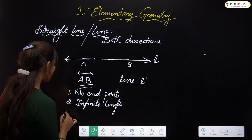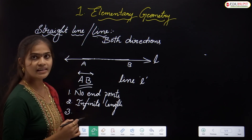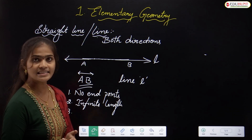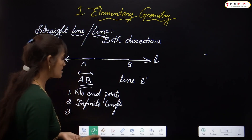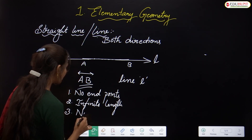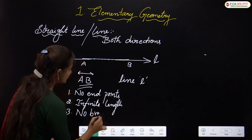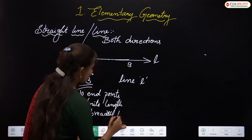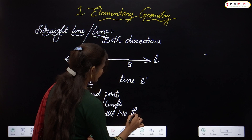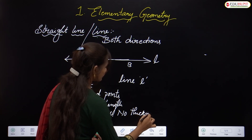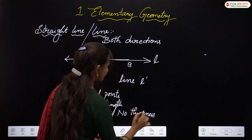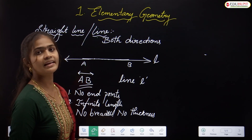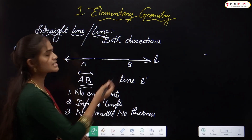The next property: does a straight line have any breadth or thickness? No — a straight line has no breadth and no thickness. These are the properties related to the straight line.